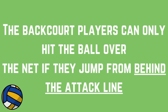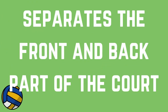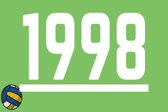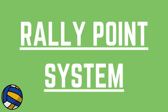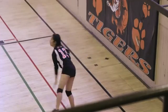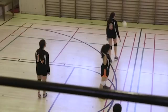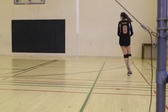The back court players can only hit the ball over the net if they jump from behind the attack line, also known as the three-meter line, which separates the front and back part of the court. Since 1998, volleyball has been using a new scoring system known as the rally point system, where teams score a point on every rally regardless of which team served. Formerly, a team could only win a point if it served the ball, and winning the serve back from the opposition was known as a side-out.